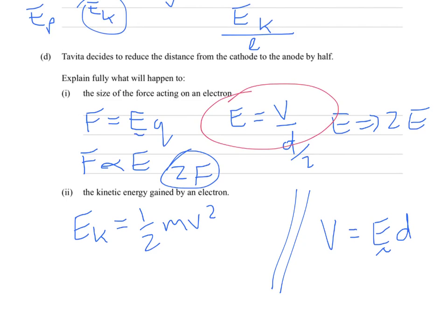Our electric field strength we've seen has doubled to 2E. But our distance, remember our distance has halved to D over 2. So what we're going to find is our voltage has not changed. So our voltage has not changed. Because the 2E from twice the electric field strength is going to be cancelled out by the D over 2 from halving the distance. So the actual voltage has not changed. That's very interesting.